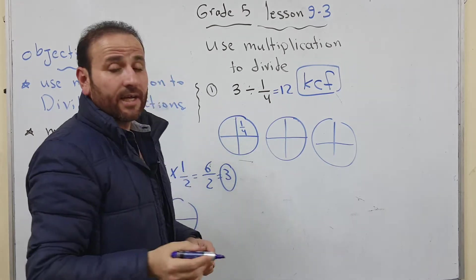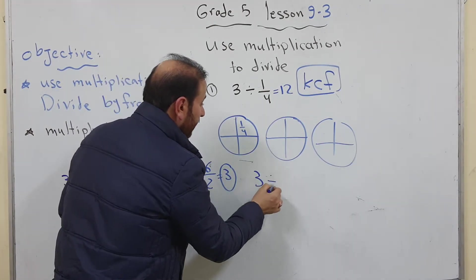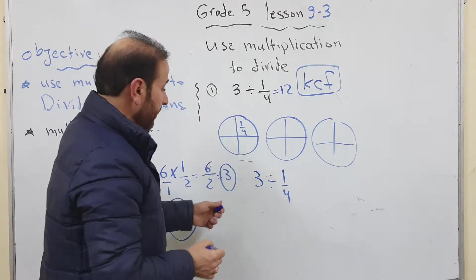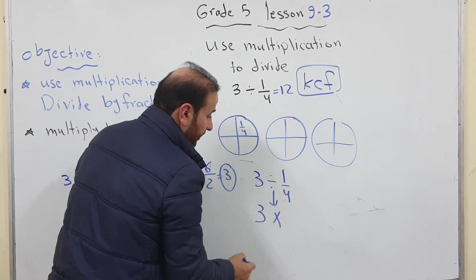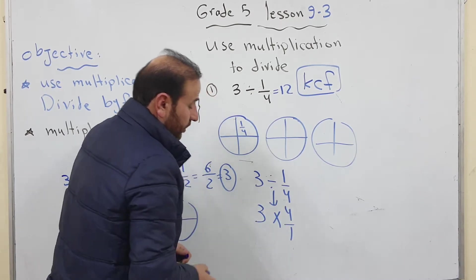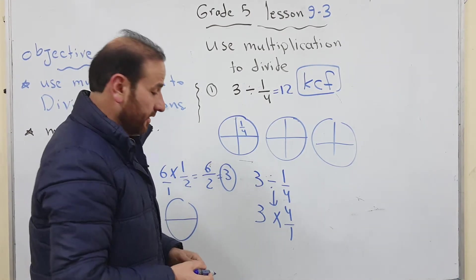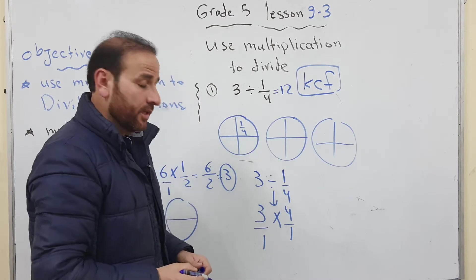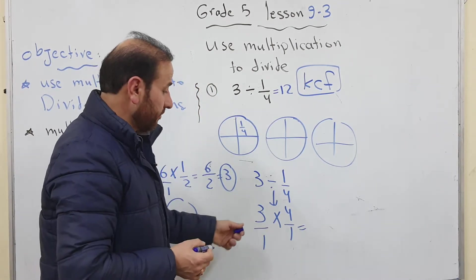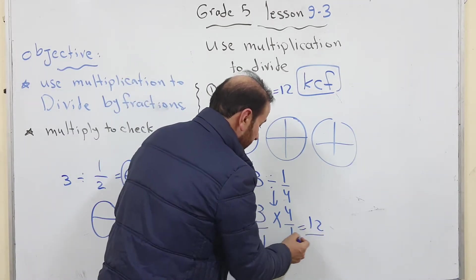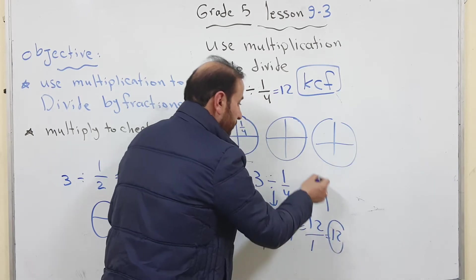If we use now the division rule, so I have 3 divide 1 over 4. Now keep me 3, change me to multiplication and flip me 4 over 1. So now I want to multiply these two fractions instead of dividing them. I put 1 as the numerator of 3. Then as you remember how to multiply fractions, 3 multiply 4 equals 12, 1 multiply 1 equals 1. So the answer is 12 as we have mentioned here.